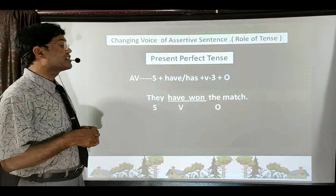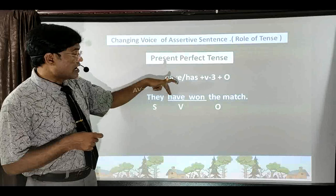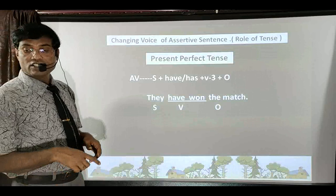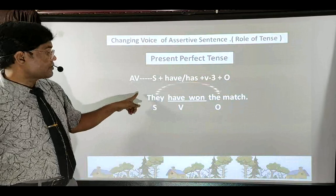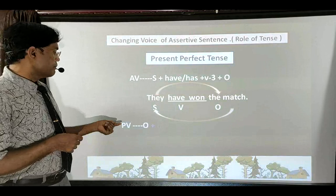Sample sentence: 'They have won the match.' Identify: subject is 'they', verbal group is 'have won', and 'the match' is the object. As soon as tense changes, passive voice formula also changes. When making passive voice, replace subject with object and object with subject. Let us see how the formula looks in Present Perfect Tense.